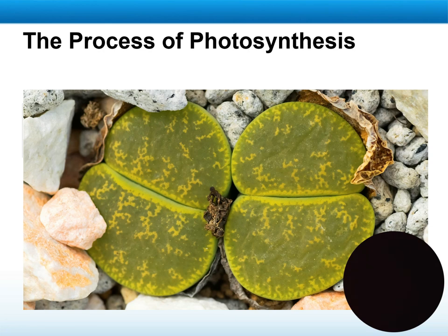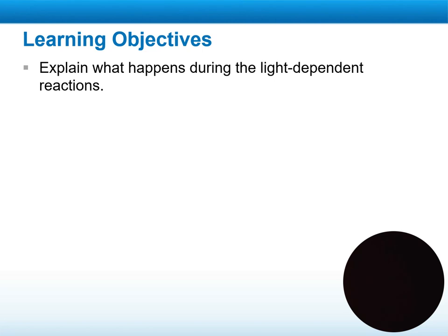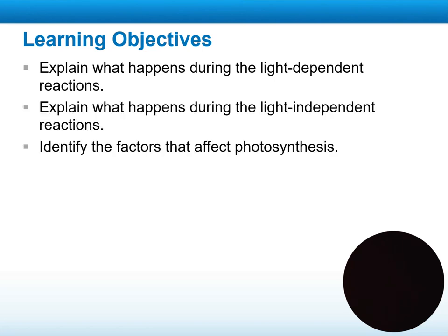We will have a simple overview of photosynthesis — how we write it, the reactants in words and as symbols. Then we will talk about the two types of photosynthesis: the light-dependent reaction and the light-independent reaction. After covering all of this, we will go to section 9.3 on the process of photosynthesis, where we will explain what happens during the light-dependent reaction and the light-independent reaction, how they differ from each other, and identify the factors that affect photosynthesis.